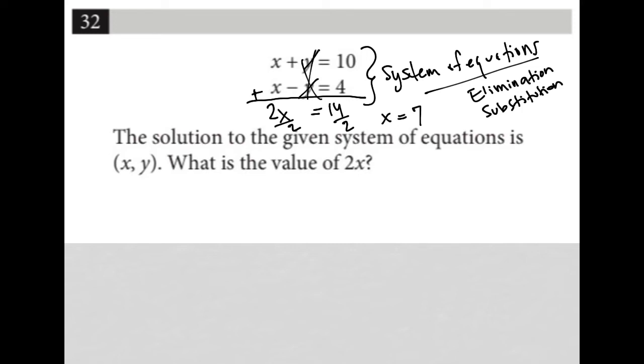Now, I could also find y, but I'm going to read the question now and see exactly what they're asking me to find. The solution to the given system of equations is (x, y). What is the value of 2x? Well, I just found that x equals 7. The question wants 2x, so I just figure out what 2 times 7 is, and that is 14. So our answer here is 14.